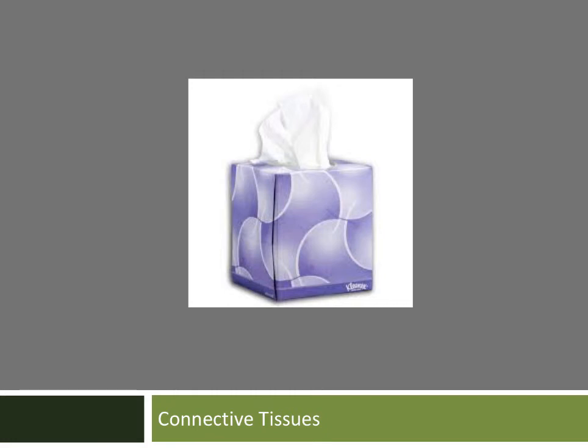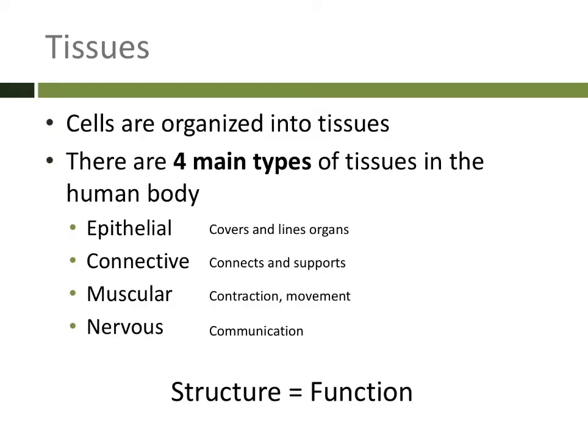Today we're going to be talking about connective tissues. You should remember that there are four types of tissue in the human body: epithelial tissues, connective tissues, muscular tissue, and nervous tissue. You should have already watched the video on epithelial tissues and know that they cover and line the inside and outside of the body.